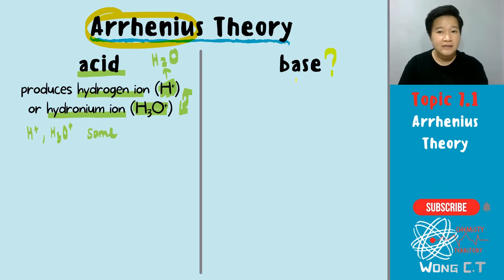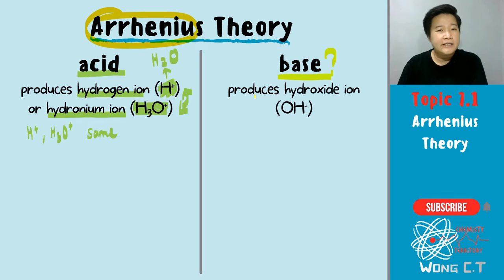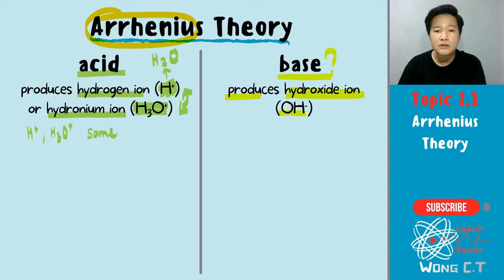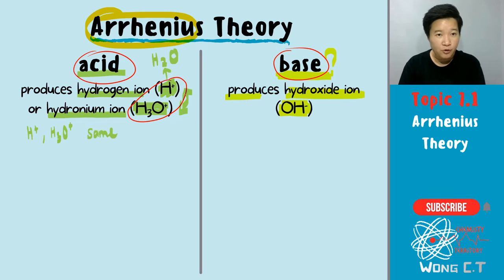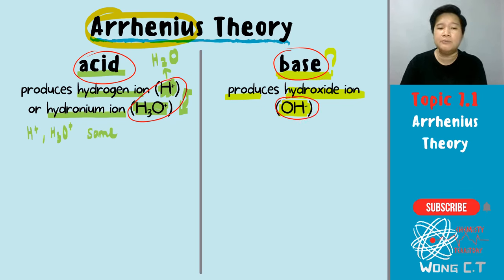How about base? How does Arrhenius theory identify a base? Simple. Arrhenius theory states that if a species produces hydroxide ion — if a species dissolves in water and produces OH−, then it is a base. That is how Arrhenius theory identifies your acid and also your base. For the acid, we need H+ or H3O+; while for the base, we need to produce OH−. Both the acid and base must dissolve in water.